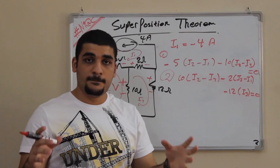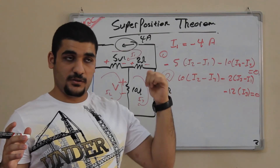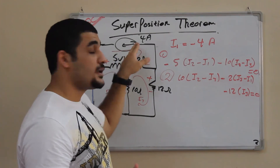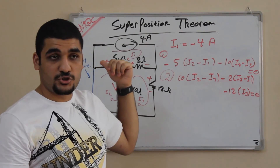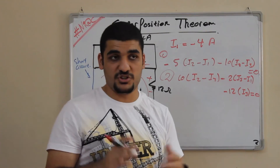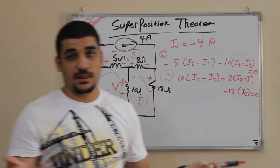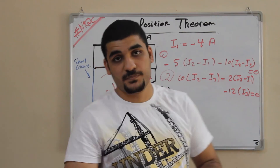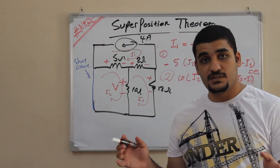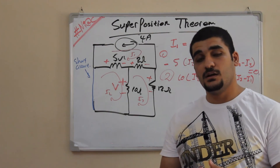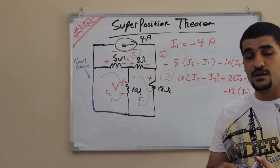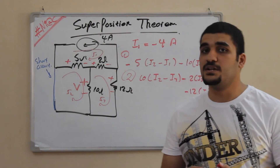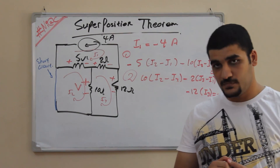At the end, you sum the voltage found by removing the current source and keeping the voltage source, with the voltage found by keeping the current source and shorting the voltage source. Since both are in the same direction, you simply add them to get the final result for V affected by both sources. This is a very basic example explaining the superposition theorem. I'll leave you to review this theorem, and we will continue in the second part with another example explaining more details. I hope you enjoyed this video — have a good watch.